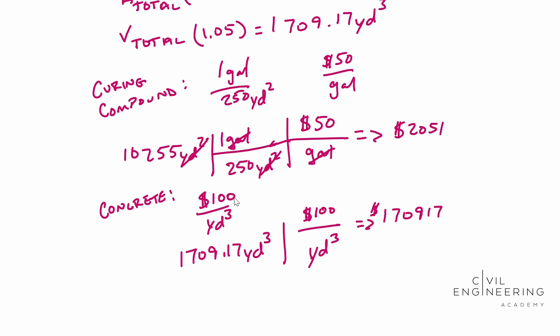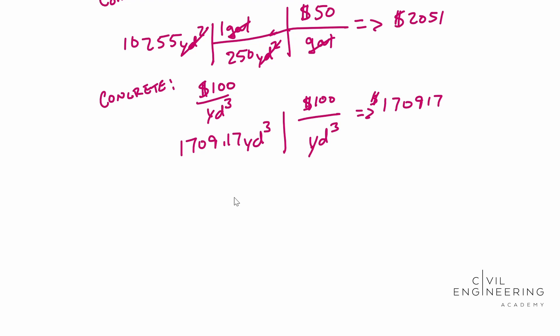And we need to add these guys up and that will give us our total material cost. So our total cost is equal to 2,051 plus 17,091.7. And that gives you an answer of 17,296.8. So there's your answer. So I hope this helps and we'll catch you next time.